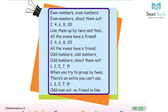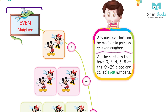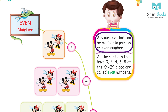Odd numbers, odd numbers, odd numbers — shout them out! One, three, five, seven, nine. When you try to group by twos, there is an extra you can't use. One, three, five, seven, nine — odd man out, no friend in line!